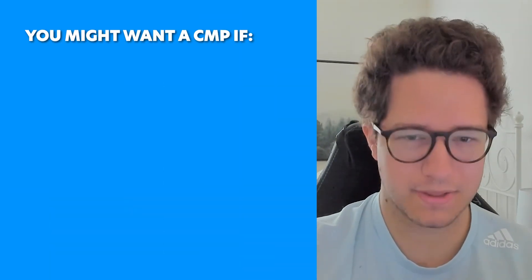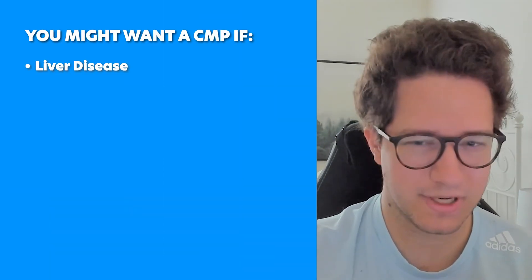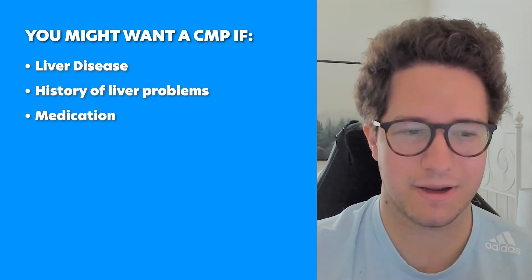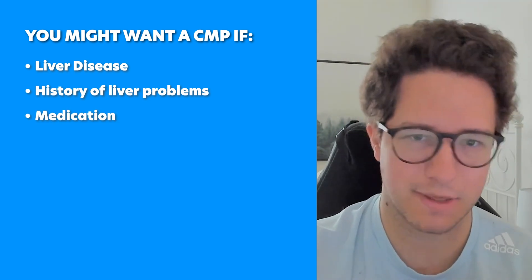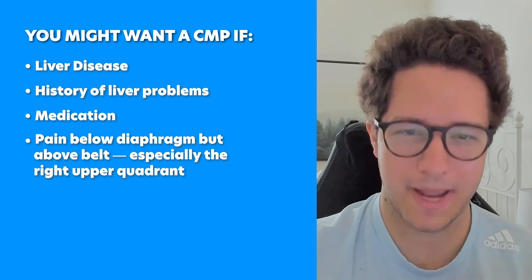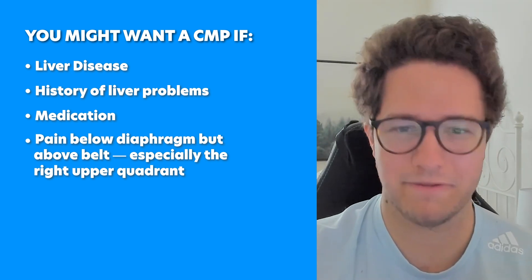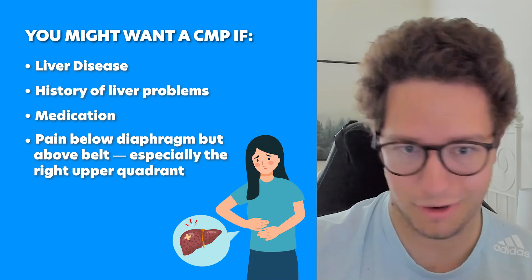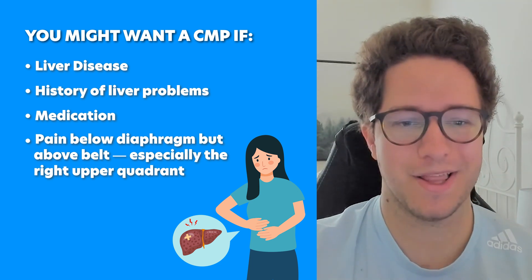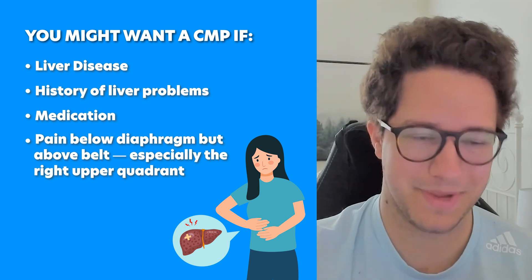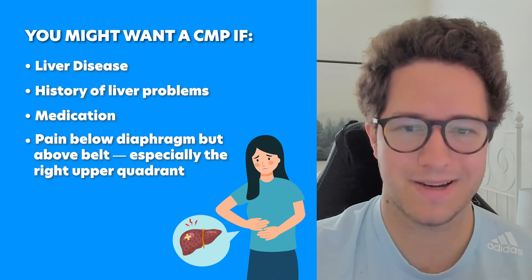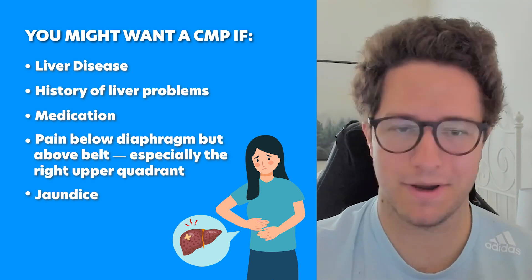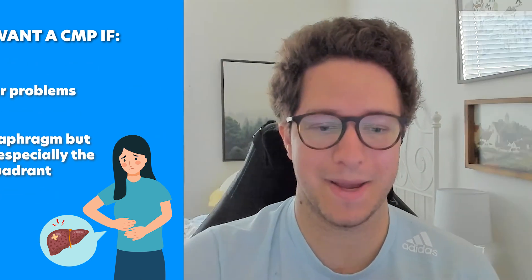You might want to order a CMP if they have liver disease or any history of liver problems, if you're prescribing a medication that could affect the liver like antibiotics or pain relievers, any pain below the diaphragm but above the belt — especially in that right upper quadrant for liver and gallbladder problems. If I have right upper quadrant pain, jaundice, or a medication that is going to harm the liver, I always go with a CMP instead of a BMP.